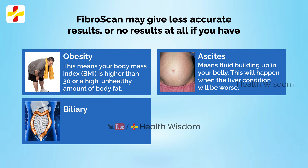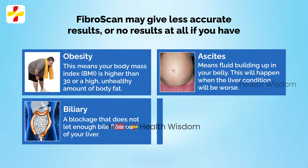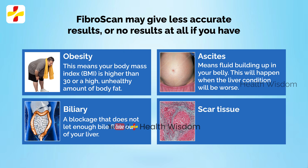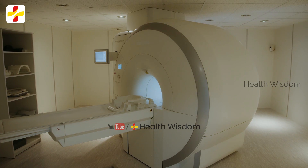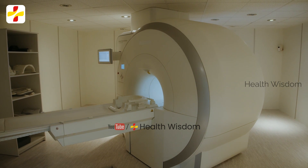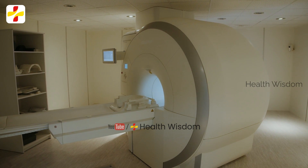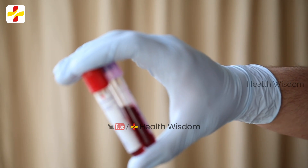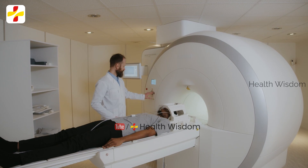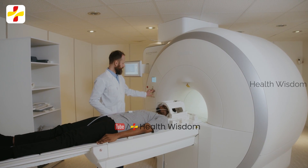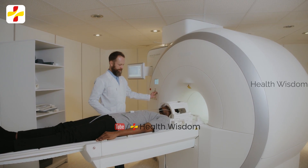Other limiting conditions include biliary obstruction — a blockage that does not let enough bile flow out of your liver — and scar tissue from surgery or radiation built up near your liver. Your doctor may use imaging tests such as ultrasound, CT, or MRI to see your liver condition. They may also use blood tests like LFT or a certain type of MRI to measure scarring and fatty changes in your liver.